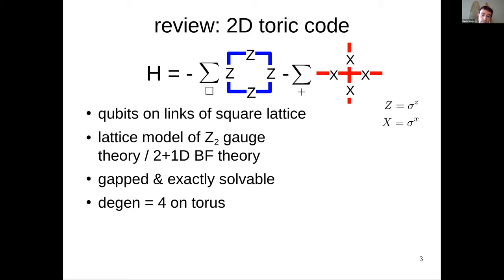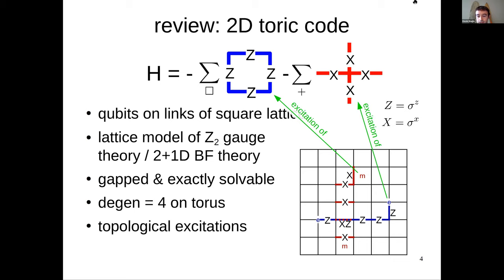Before Fracton models, there were topological orders like Toric code — lattice models of Z₂ gauge theory or 2+1D BF theory. The Hamiltonian has a plaquette operator (product of Z's around a plaquette) and a cross operator (product of four X's along a cross). It's gapped, exactly solvable, stable to excitations, with degeneracy four on a torus. You have topological excitations: flux excitations created at ends of strings of Pauli-X operators, and electric excitations created with strings of Z operators. These have braiding statistics — wrapping an E around an M gives a minus-one phase.